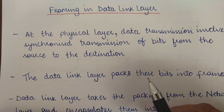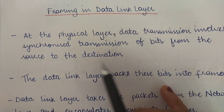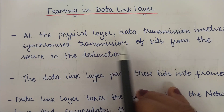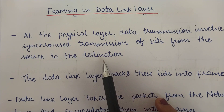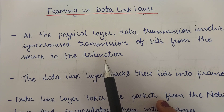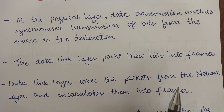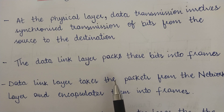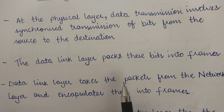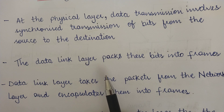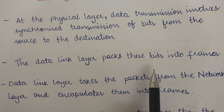At the physical layer, data transmission involves transmission of bits from the source to the destination. The data transmitted at the physical layer is the raw bits — zeros and ones. When these raw bits are transmitted from the physical layer to the data link layer, the data link layer packs these bits into frames.